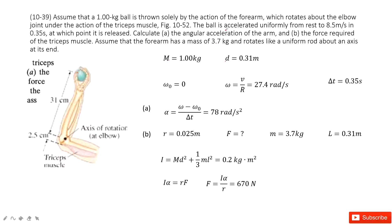Initially the angular velocity is zero. From stationary, the final linear velocity is 8.5 meters per second, and the time taken is given. Since this velocity is a linear velocity with units of meters per second, we must convert it to angular velocity. Angular velocity is v divided by r, which gives us units of radians per second.